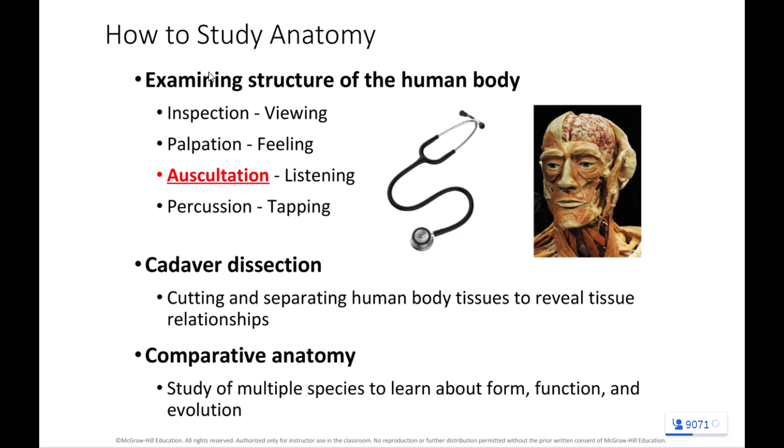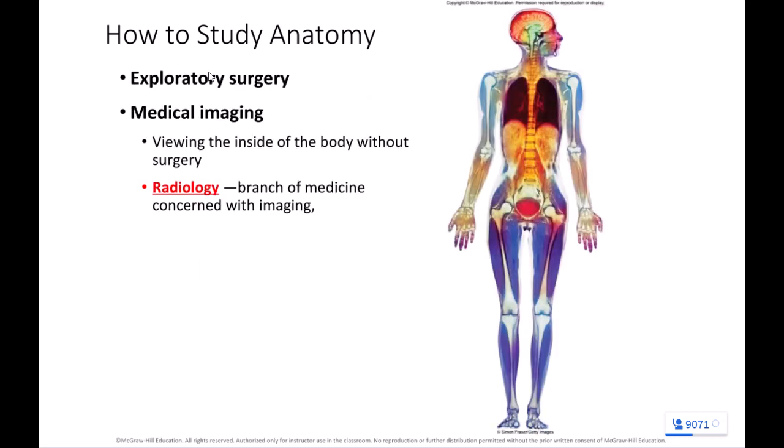Another method is comparative anatomy — we're not going to be doing that in this class. If you take a zoology or evolutionary biology course, you'd spend a lot of time dissecting sharks, squids, pigs, starfish, and other organisms. But this is human anatomy and physiology, so we stay focused on humans.